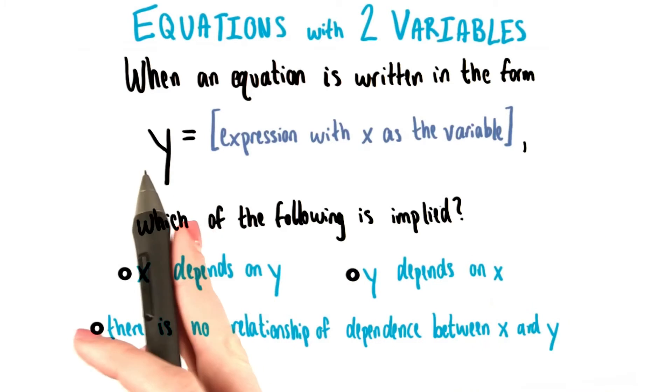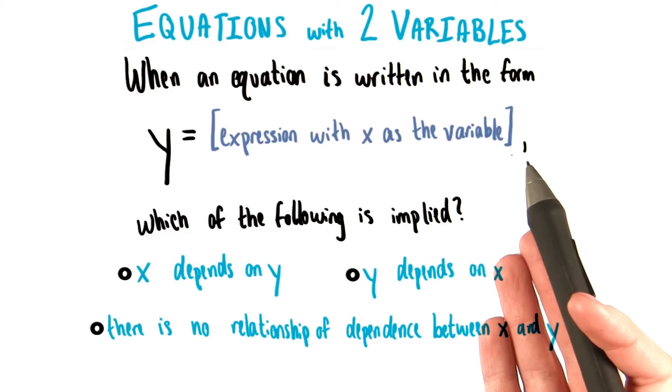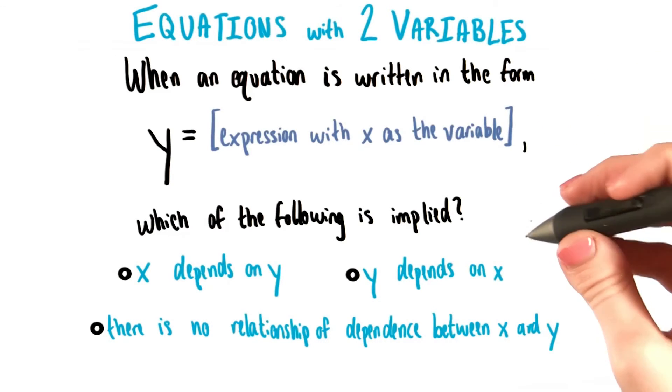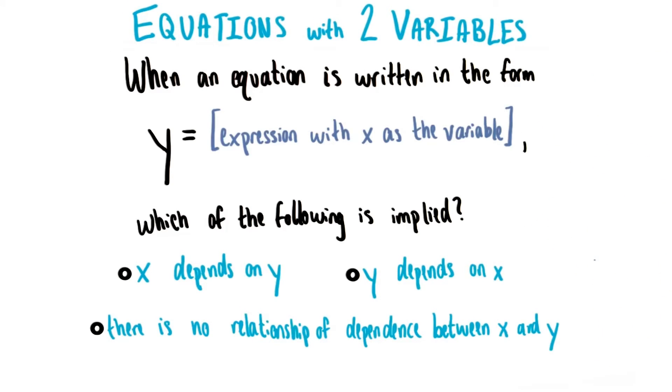Now, those equations were all written in the form y equals some expression where x is the variable. And if we have an equation that's written in this form, which of these three statements down here do you think is implied?